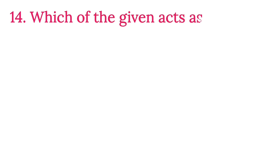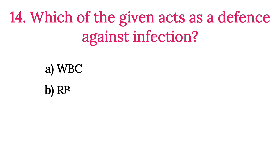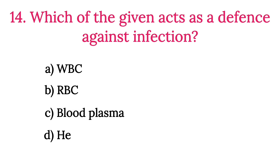MCQ Number 14: Which of the given cells is a defense against infection? Option A: WBC. Option B: RBC. Option C: Blood Plasma. Option D: Hemoglobin. The correct option is Option A, WBC.